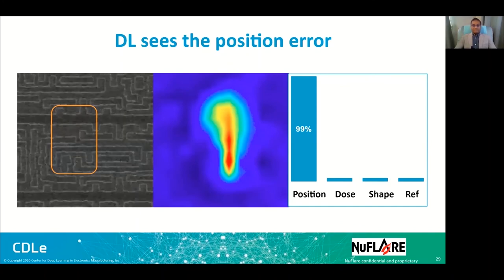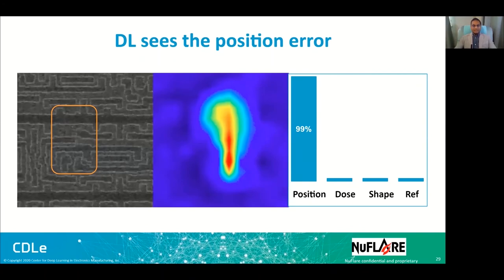We saw very positive and promising results. In one example, on the left you see a reference and defect SEM image for a position error, and on the right-hand side the network outputs a probability of 99%. In the middle is a heat map showing what the deep learning network focuses on — it shows high-intensity color in the region where the error is located. So the network is not only giving a high probability for the position error, but also focusing on the exact spot where the error is, which gives very good confidence in the network.